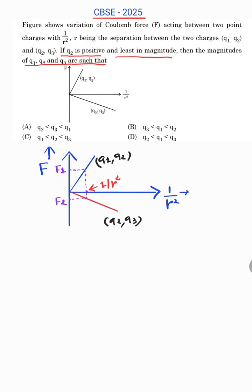Now see here, F versus 1 upon R square is linear because electric force is equal to 1 upon 4 pi epsilon naught, Q1, Q2 upon R square. So FE proportional to 1 upon R square, here FE is Y coordinate, 1 upon R square is X coordinate, Y proportional to X. So graph of FE versus 1 upon R square is linear.